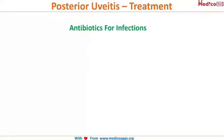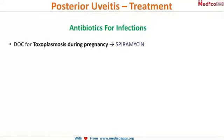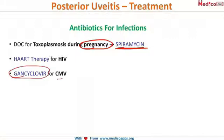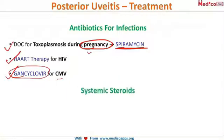For posterior uveitis infections, antibiotics are used. For toxoplasmosis in pregnancy, the drug of choice is spiramycin; for HIV, HAART (highly effective antiretroviral therapy) is used; and ganciclovir is the drug for cytomegalovirus. Systemic steroids — not topical — are given here, but usage must be limited to less than three months.